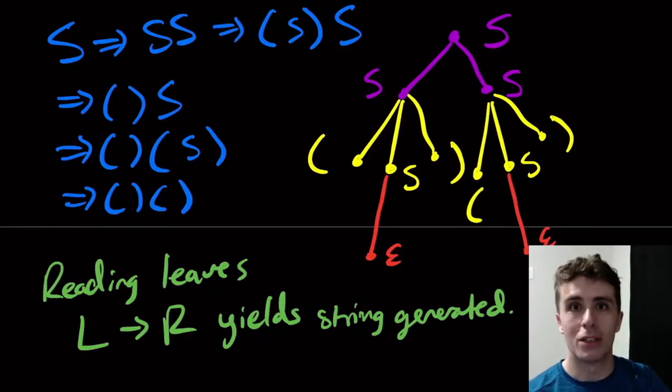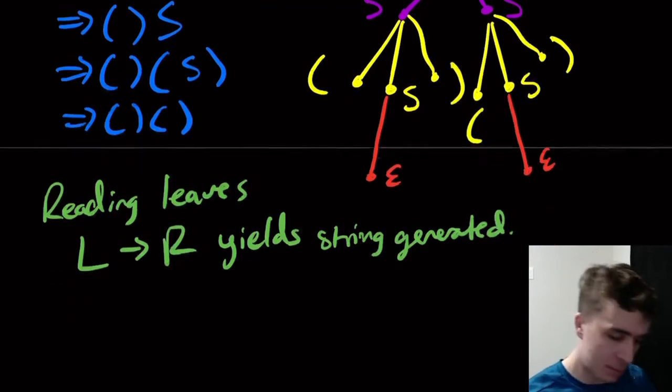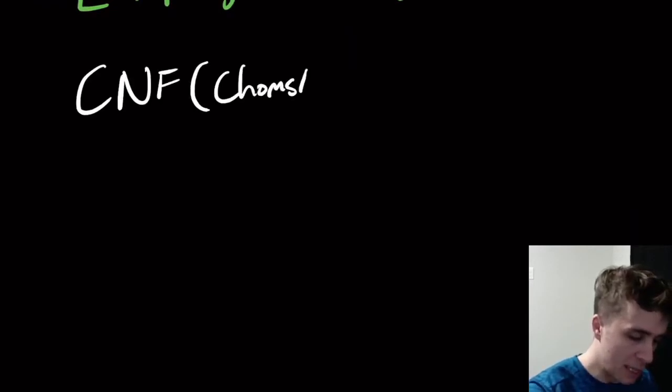Hi, welcome to another edition of Easy Theory. I say a bunch of stuff here and I guess I'm talking about parse trees and today we're going to be talking about Chomsky normal form, so CNF, and how it relates to parse trees.